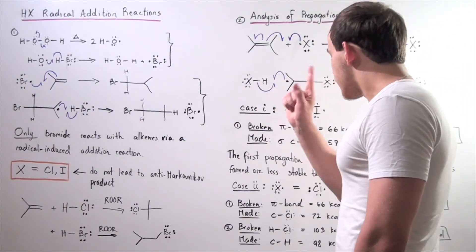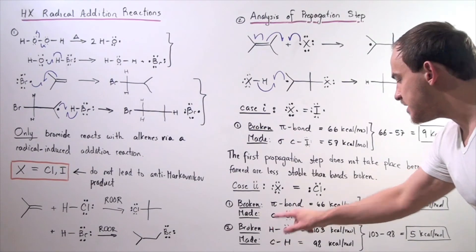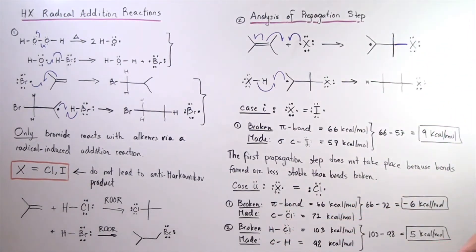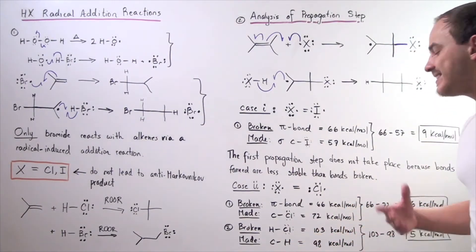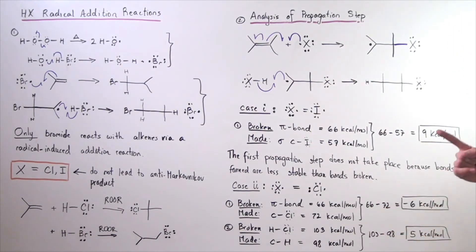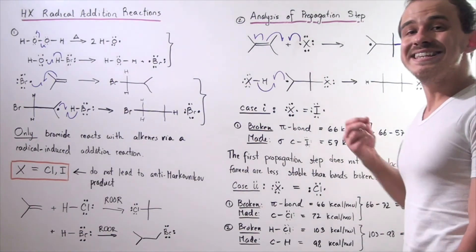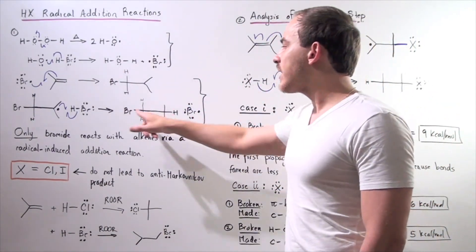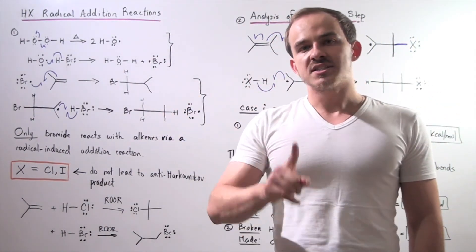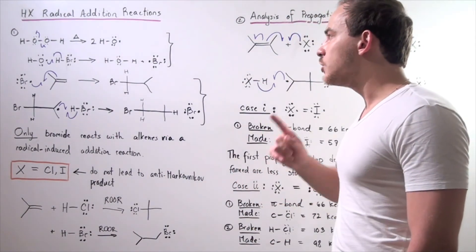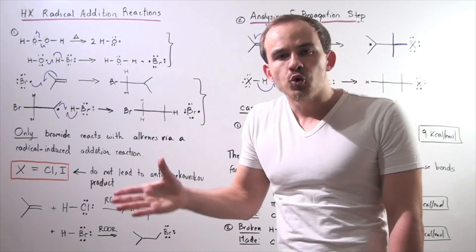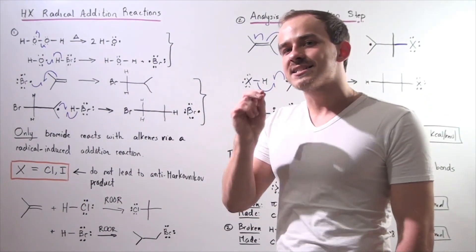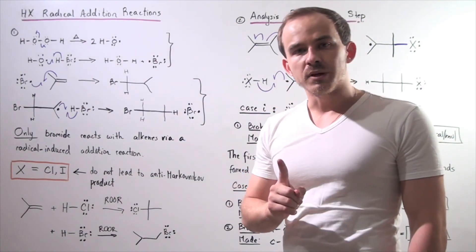What about the second step? In step two, the HCl bond is broken at 103 kcal/mol, and the C–H bond is made at 98 kcal/mol. So 103 minus 98 gives us positive 5 kcal/mol — the second propagation step is endothermic when our halogen is chloride. That is why chloride will not undergo this radical reaction.